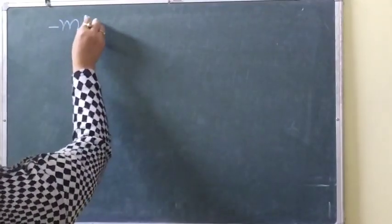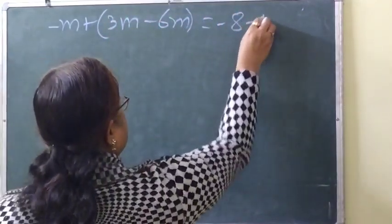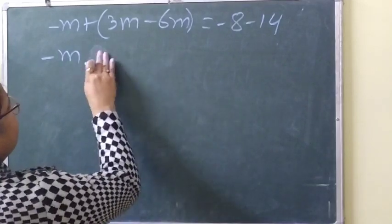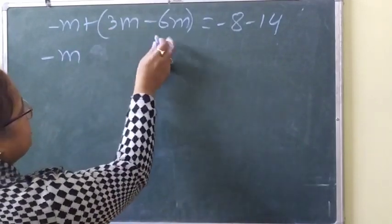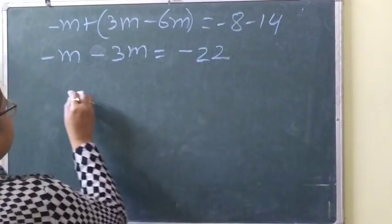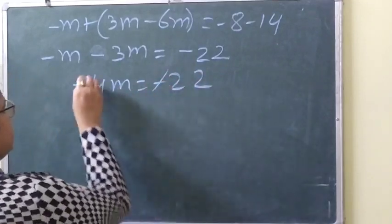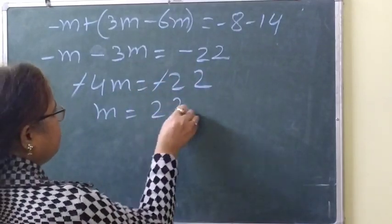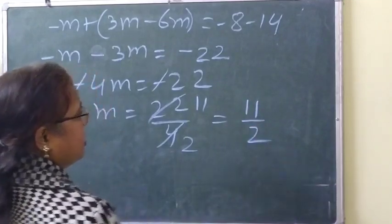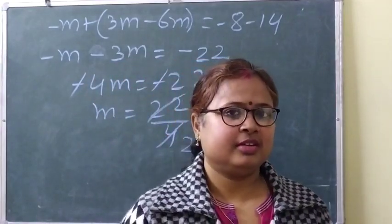Final question: minus m plus 3m minus 6m equals minus 8 minus 14. Combining: minus m plus 3m minus 6m gives minus 4m, and minus 8 minus 14 is minus 22. So minus 4m equals minus 22. Minus and minus cancel, giving m equals 22 by 4, which simplifies to 11 by 2. Just apply your brain — it is easy and very interesting.